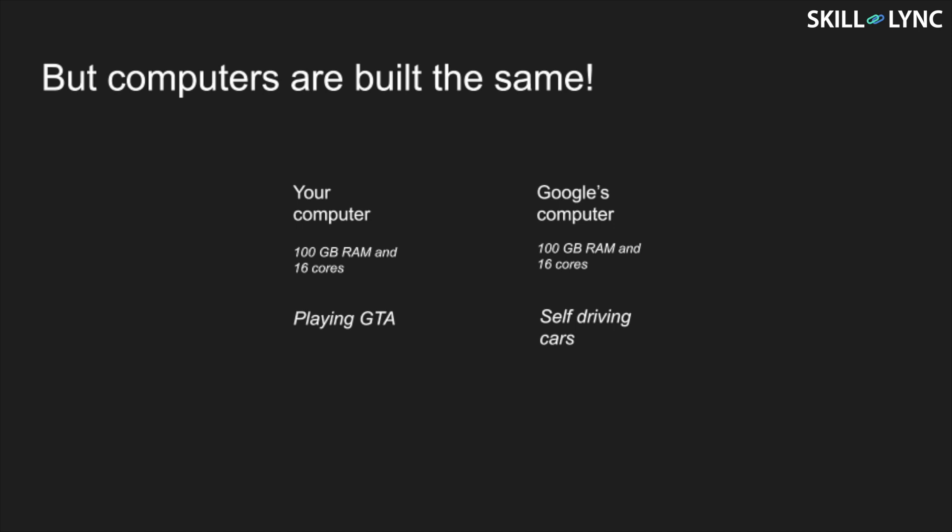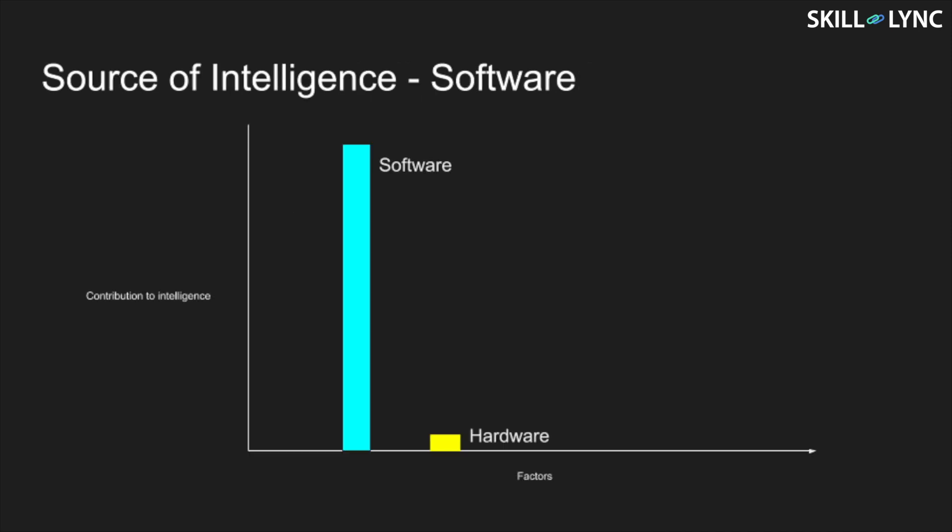So where is the source of intelligence? In one word: software. An AI system includes the software and other components that the software needs to function like a human being.